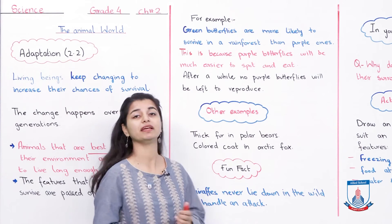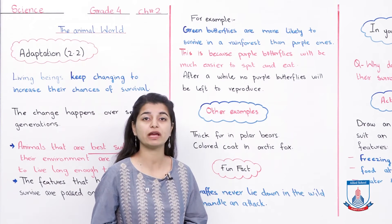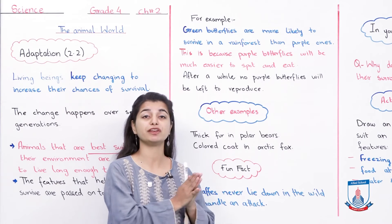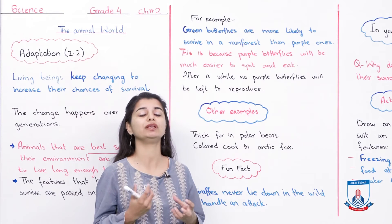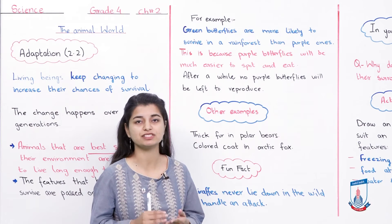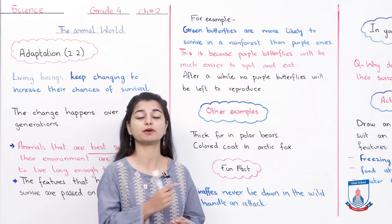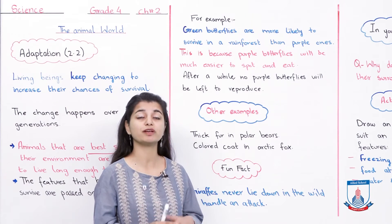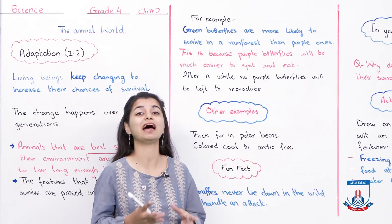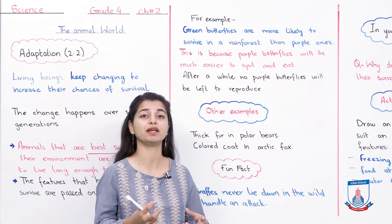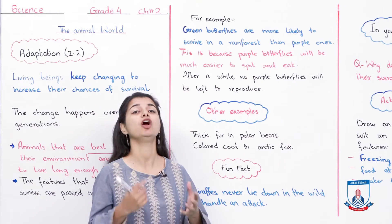Another example is the thick fur of polar bears. Polar bears live in very cold, snowy areas and have a very thick layer of fur. This fur developed over many generations — it was not always there. The fur provides insulation, keeping them warm. They have adapted to their cold environment and developed this feature which protects them from the cold.